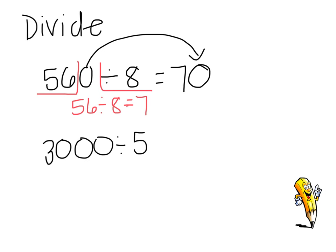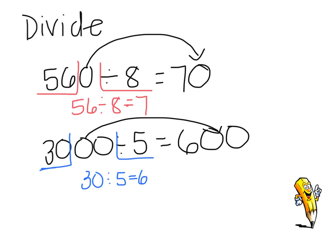For 3,000 divided by 5, I can't do 3 divided by 5, but I can use 30 divided by 5 as my basic fact. I know that 30 divided by 5 equals 6 because 6 × 5 equals 30. That tells me that 3,000 divided by 5 is going to be a 6 with the two zeros brought into my answer, for 600. How'd you do?